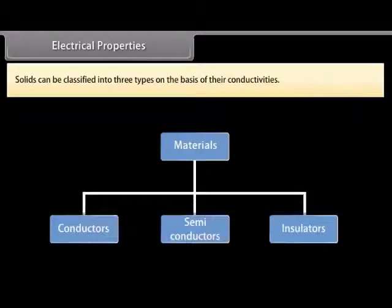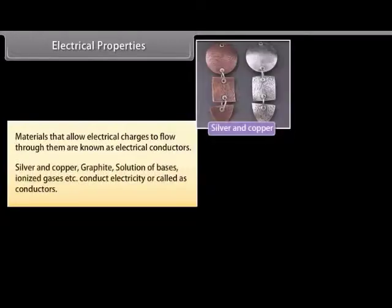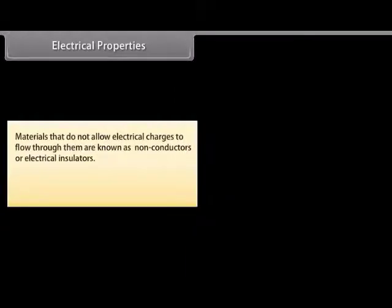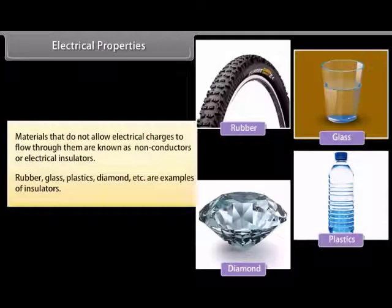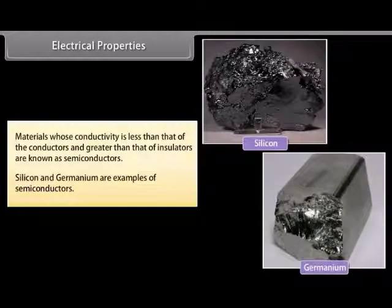Solids can be classified into three types on the basis of their conductivities. Materials that allow electrical charges to flow through them are known as electrical conductors — silver, copper, graphite, solutions of bases, ionized gases etc. Materials that do not allow electrical charges to flow are non-conductors or insulators — rubber, glass, plastics, diamond etc. Materials whose conductivity is less than that of conductors but greater than that of insulators are known as semiconductors. Silicon and germanium are examples of semiconductors.